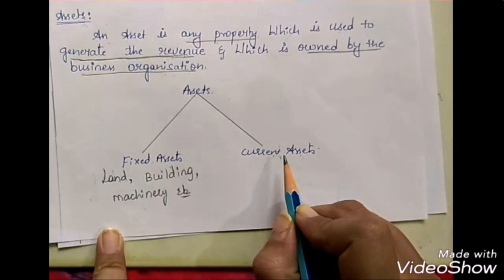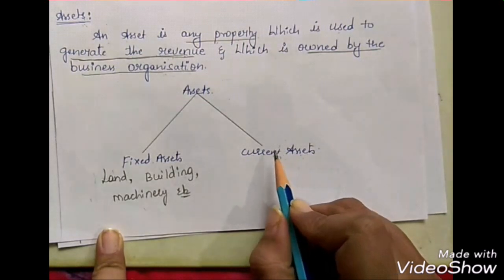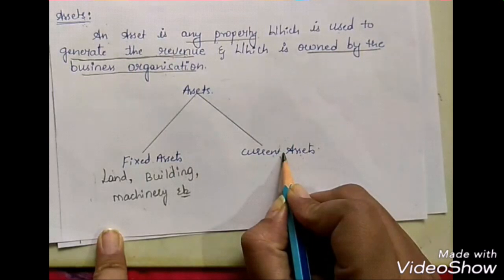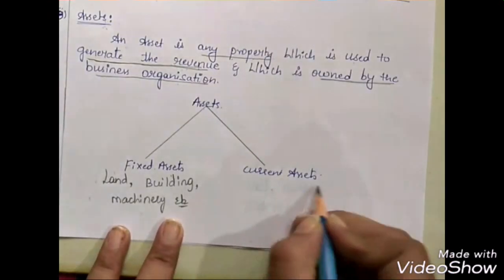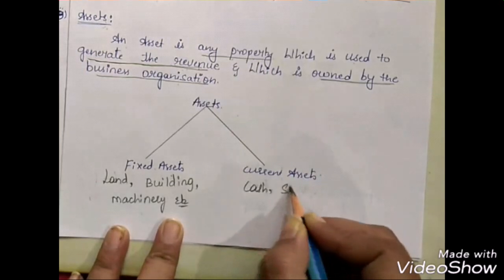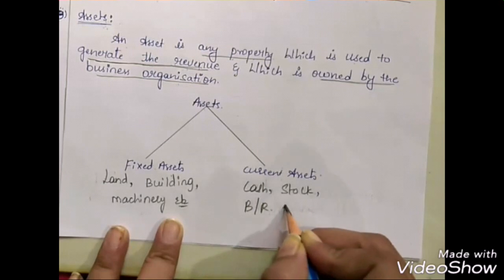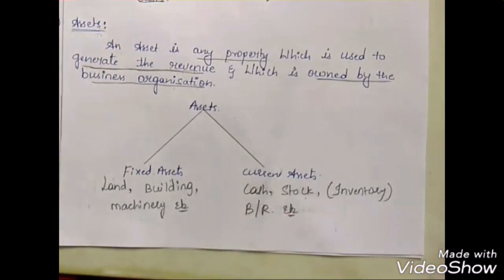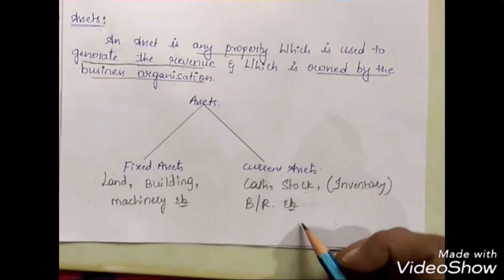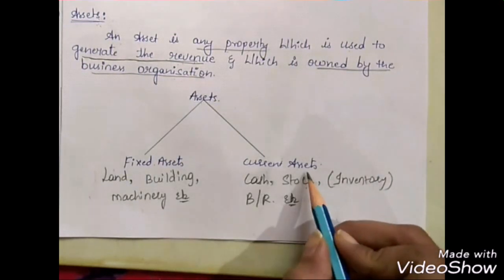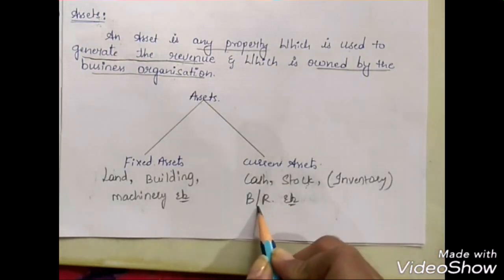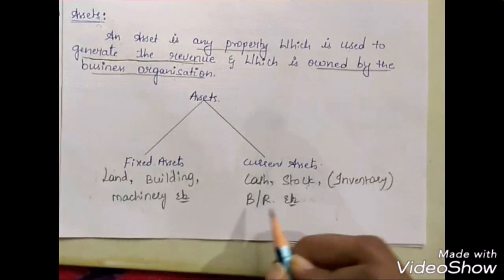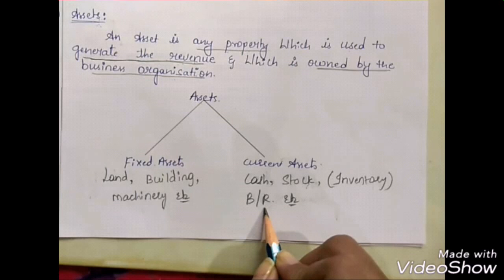Current assets are assets used on a daily basis in the firm. They do not stay for a longer time in the organization and are also known as fast-moving assets. Examples of current assets include cash, stock, and bills receivable. Stock, also called inventory, refers to finished goods which are ready to be sold to customers. Bills receivable are amounts to be received in future days when goods are sold on a credit basis.